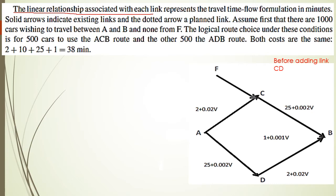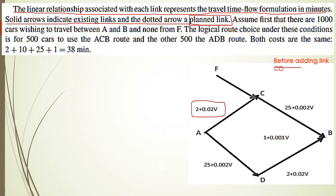The linear relationship associated with each link represents the travel time-flow formulation in minutes — that means these are the travel cost functions. Solid arrows indicate existing links and the dotted arrow is the planned link CD. I removed it to analyze the network before adding this link, then I'll analyze it again after adding it to see the effect and how the paradox works. Assume first that there are 1000 cars wishing to travel between A and B.